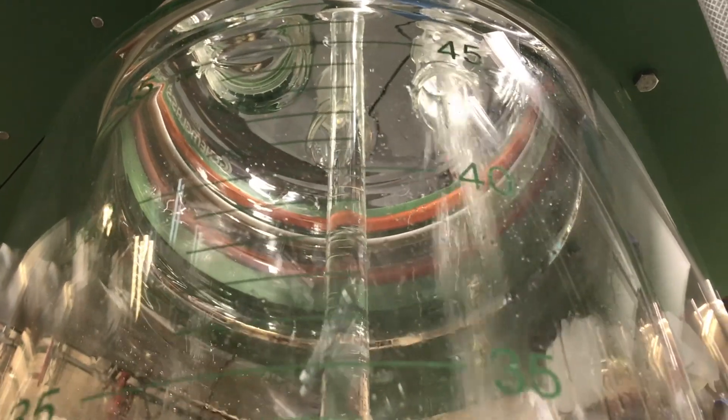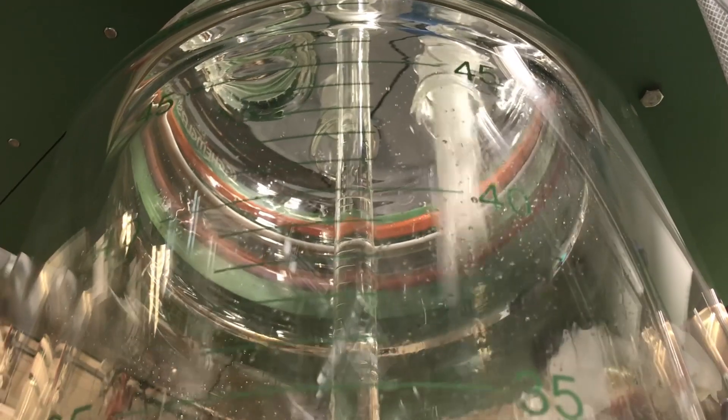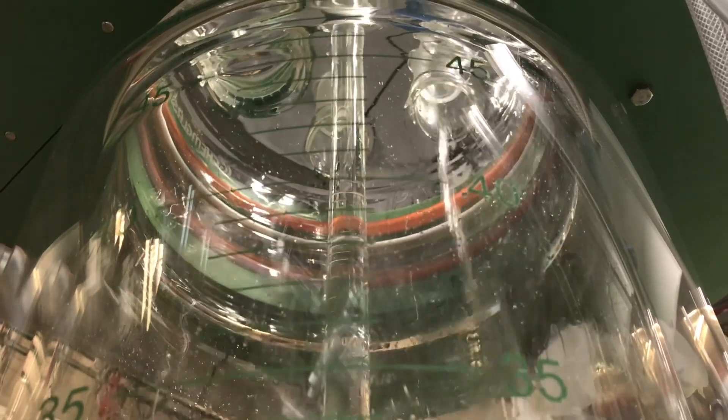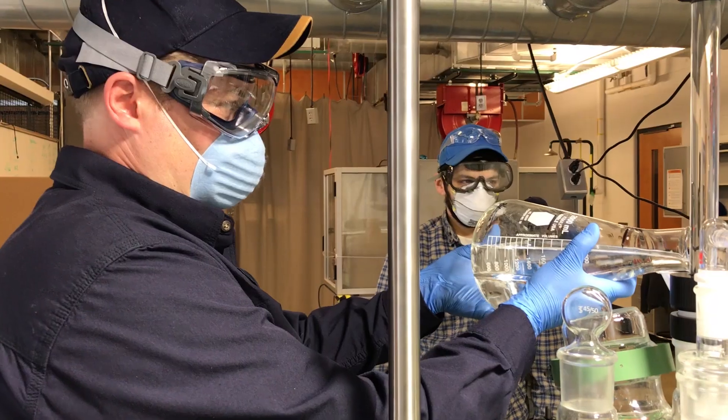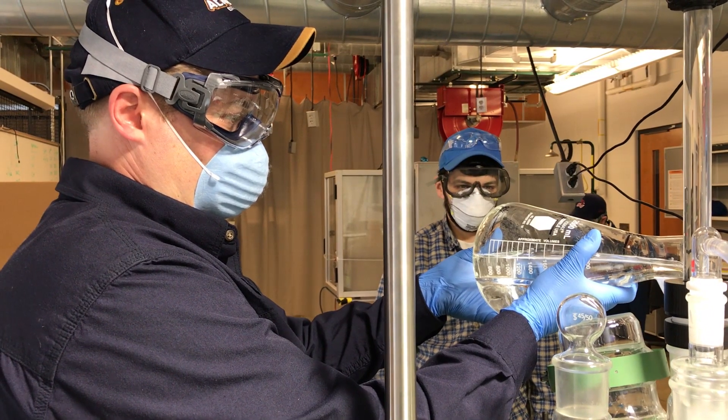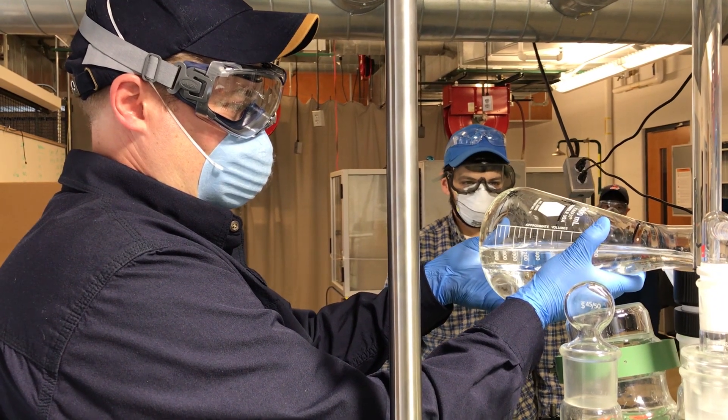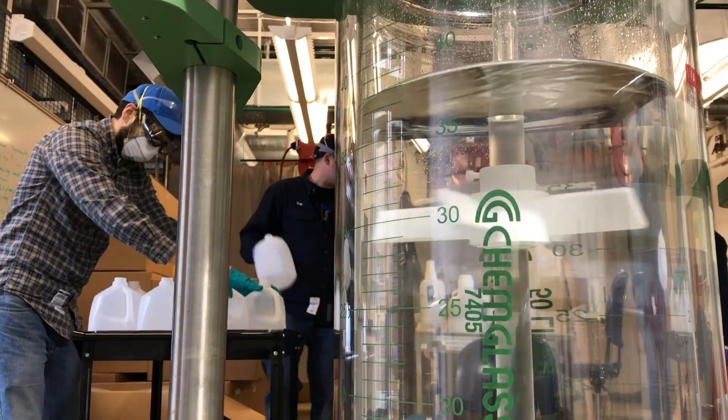Then we fill the reactor with a measured amount of ethanol, starting with 95% alcohol. We add the other three ingredients and fill the rest with water, then mix for a few minutes to ensure a homogeneous mixture.